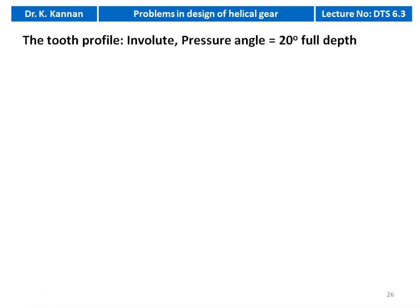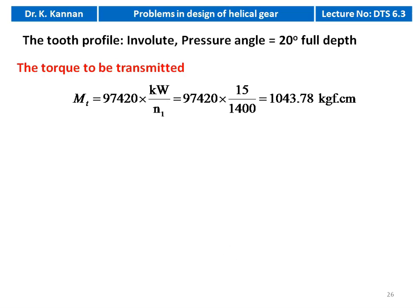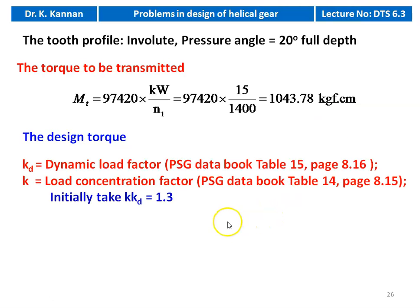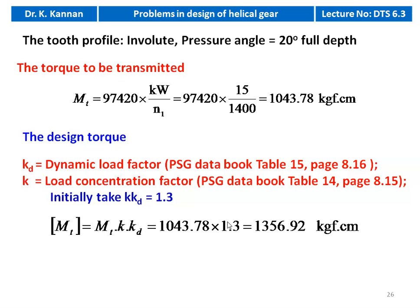We take the involute profile with pressure angle α = 20° full depth. Torque transmitted by the helical gear: MT = 97420 × (P in kW) / N = 97420 × 15 / 1400 = 1043.78 kgf·cm. For calculating the design torque, we require KKD (load concentration factor × dynamic load factor). Initially, we assume KKD = 1.3, so design torque = MT × KKD = 1043.78 × 1.3 = 1356.92 kgf·cm.